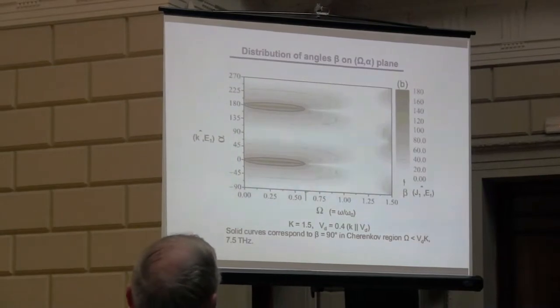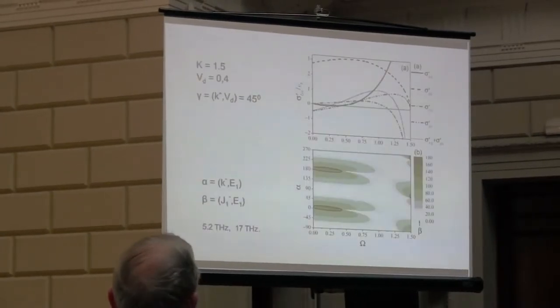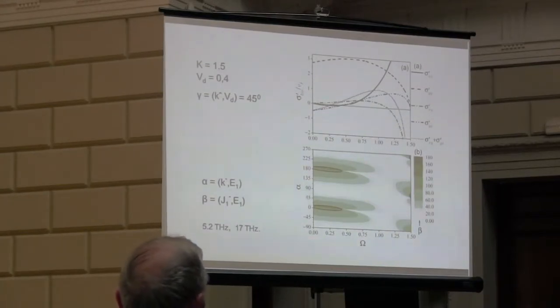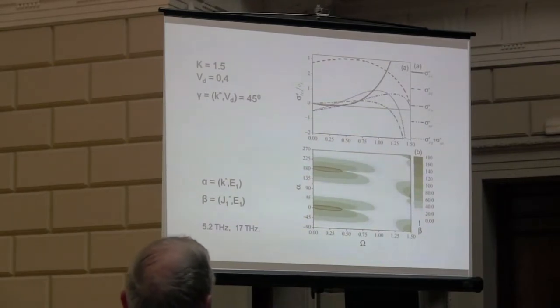This corresponds to Cherenkov instability shown here in the coordinate system. This is the angle theta between k-vector and electric field polarization on vertical axis and frequency on horizontal axis. The angle theta equals 45 is the angle characterized as Cherenkov angle. The regions of instability are this shown with black solid curve, and the upper value of frequency corresponds as estimated to about 7.5 terahertz. On the next slide we show there appears another instability region.